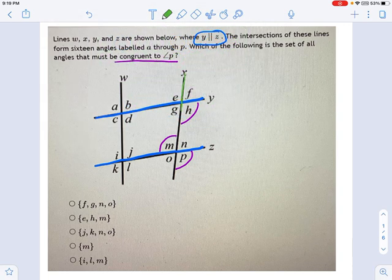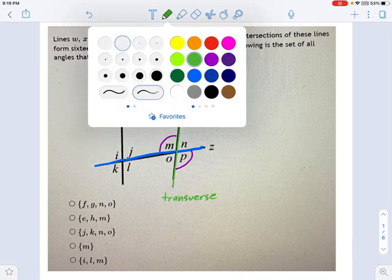I'm going to draw the transversal here in green. This right here is your transverse line. And when a transverse line cuts across two parallels, it forms equal angles. So h and p are the same measure.